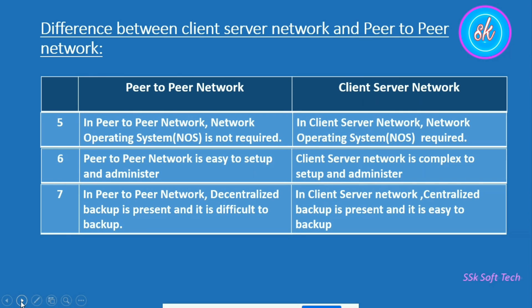The seventh point is that in a peer-to-peer network, decentralized backup is present and the backup procedure is very difficult. Backup is the copying of important data from the current computer to somewhere else for security purposes. In peer-to-peer network, important data and resources are present on different computers in the network, so it is necessary to take the backup of each machine. This backup procedure is decentralized and it is very difficult.